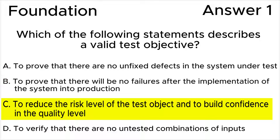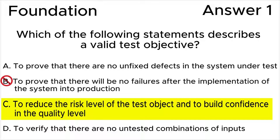Answer B is wrong according to testing principle 7 in the syllabus: absence of defects fallacy. It is a fallacy to expect that software verification will ensure the success of a system. In other words, testing cannot prove that there are no defects in the system.